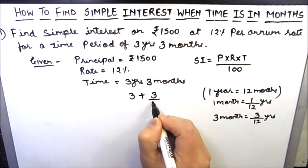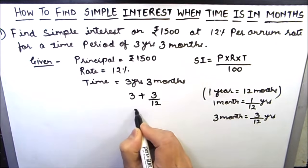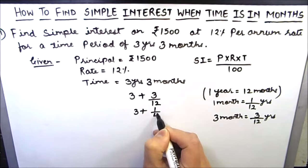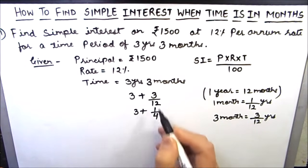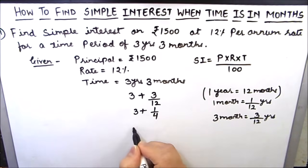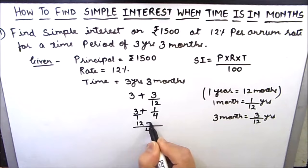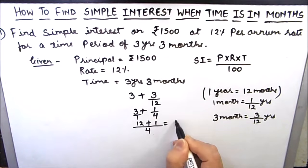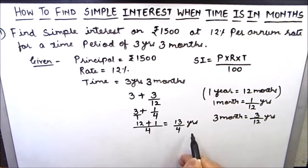So the time is 3 plus 3 by 12. We can reduce 3 by 12 to 1 by 4, giving us 3 plus 1 by 4. Taking the LCM, this becomes 12 plus 1 over 4, which equals 13 by 4 years. So our time will be 13 by 4 years.